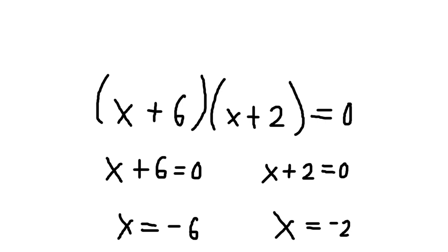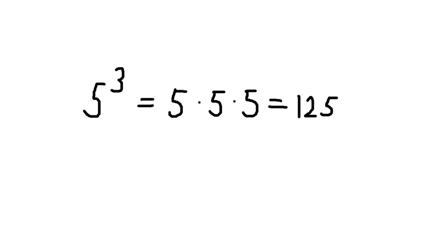Next, let's talk about rules of exponents. Exponents represent how many times a number is multiplied by itself. For example, 5 to the power of 3 means 5 times 5 times 5 is equal to 125.